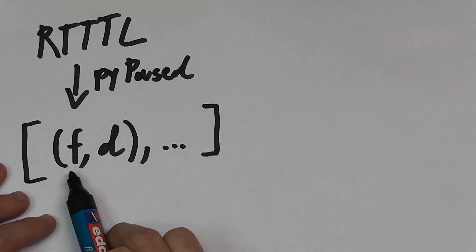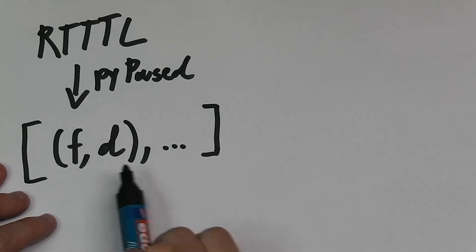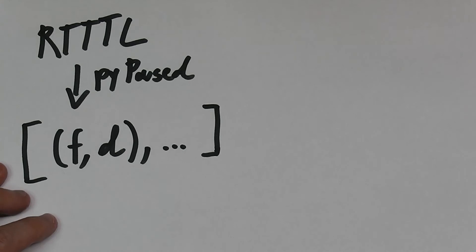Each note had a certain frequency in hertz and a duration in seconds. Pauses were actually denoted by a zero frequency here.